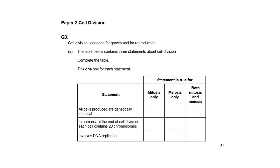Another example — again cell division, a very quick one. It's about three statements about cell division. You look at those and work out which one is mitosis, meiosis, or both.